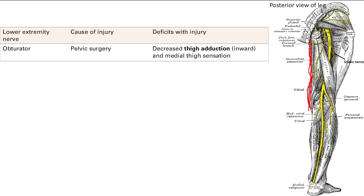Let's go to the lower extremity nerve injuries. I'm going to first start with the obturator nerve, which is not pictured, but I've drawn in red. The key thing is that it's on the medial side of the thigh. This can be damaged by pelvic injury, and its function is thigh adduction — moving the thigh medially.